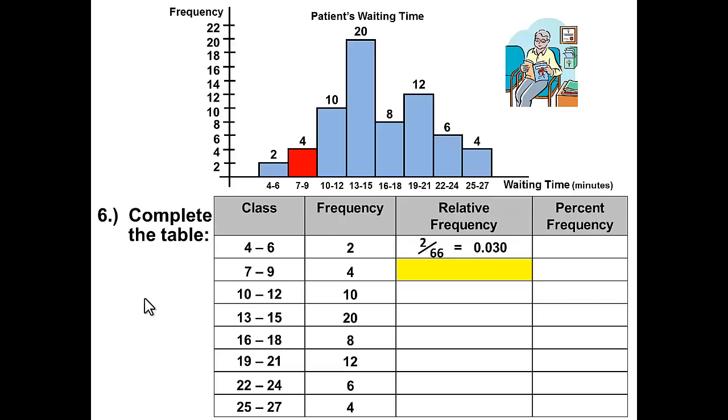For the second class, we can either use the table or the histogram. And that's the frequency of 4 divided by the total, 4 divided by 66, which gives us .061. For the third class, that will be 10 divided by 66, which gives us .152.